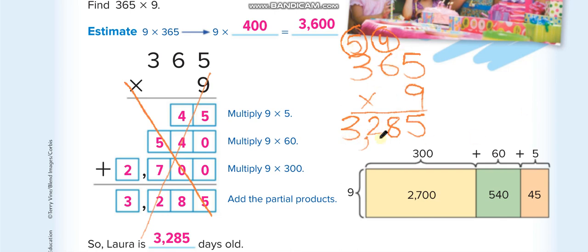Here they are doing the same question using the distributive property. We break 365 into 300 plus 60 plus 5, and here we write 9 with which number we are multiplying. 9 times 300 = 2,700; 9 times 60 = 540; and 9 times 5 = 45. When we add all these answers, we will get 3,285.